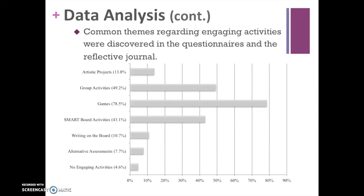The second area analyzed was common themes regarding engaging activities, discovered through the questionnaires and reflective journal. Based on what percentage of students responded that an activity was engaging: games led at 78.5% of participants. Group activities came in at 49%, and smart board activities rounded out the top three. Also notable were artistic projects, writing on the board, and alternative assessments. About 4% of students said there were no engaging activities.